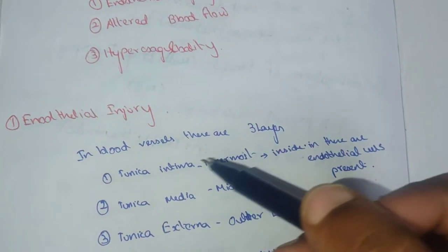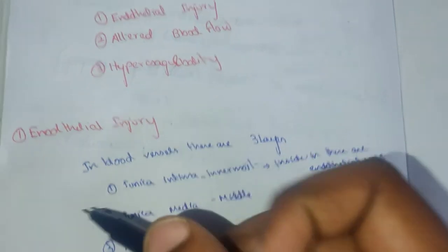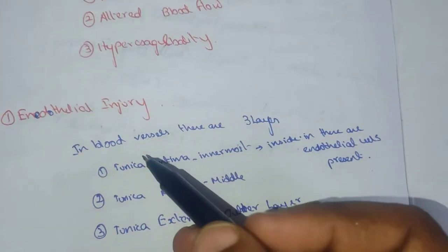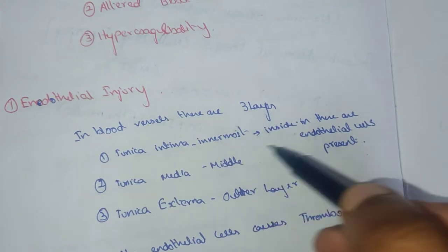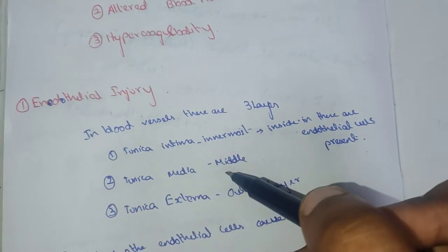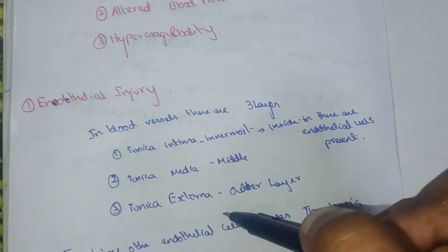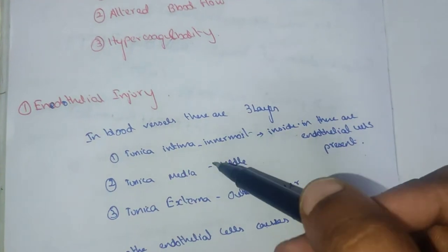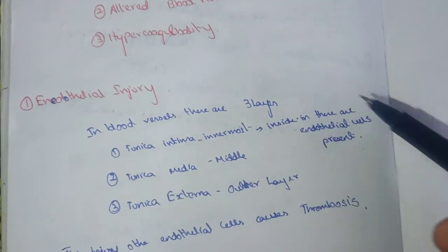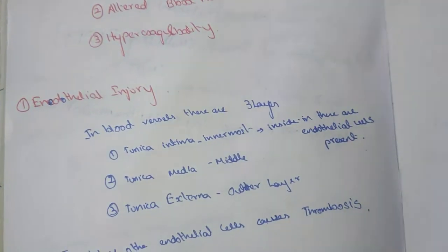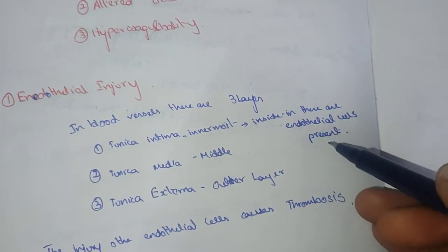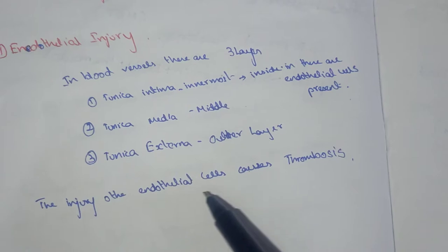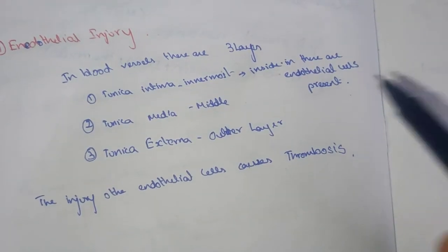Endothelial injury: in blood vessels there are three layers — tunica intima, the innermost layer; tunica media, the middle layer; and tunica externa, the outer layer. Inside the tunica intima there are endothelial cells present. Injury to these endothelial cells causes thrombosis.